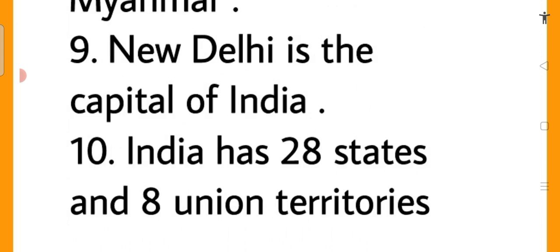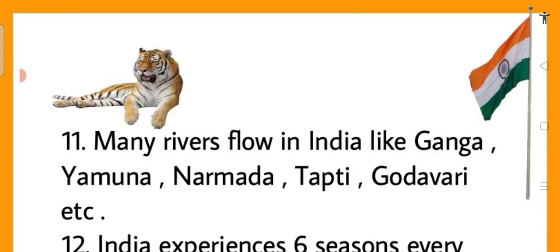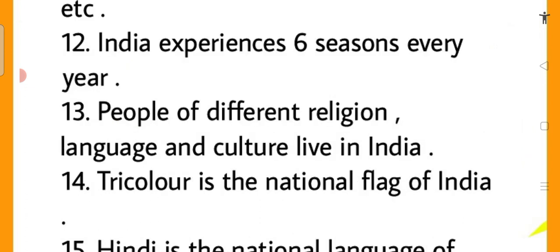New Delhi is the capital of India. India has 28 states and 8 union territories. Many rivers flow in India like Ganga, Yamuna, Narmada, Tapti, Godavari, etc. India experiences 6 seasons every year.